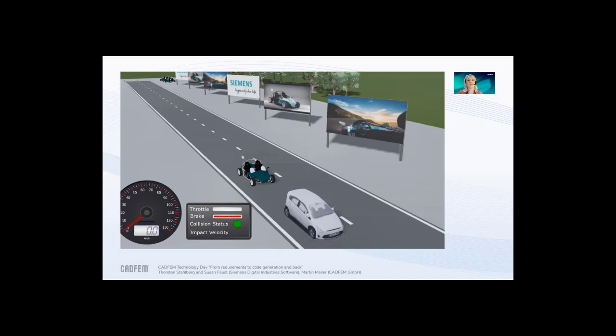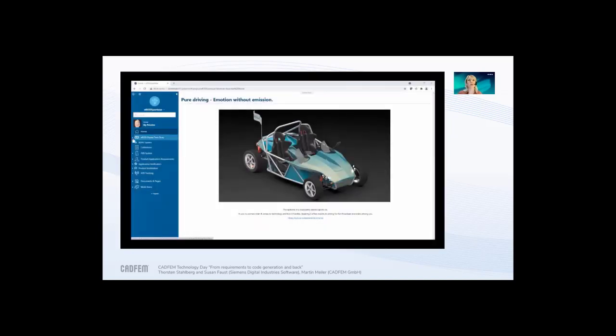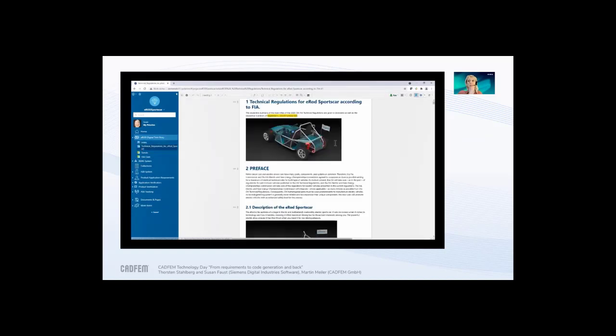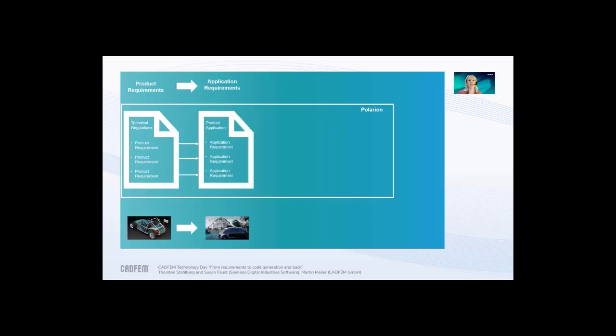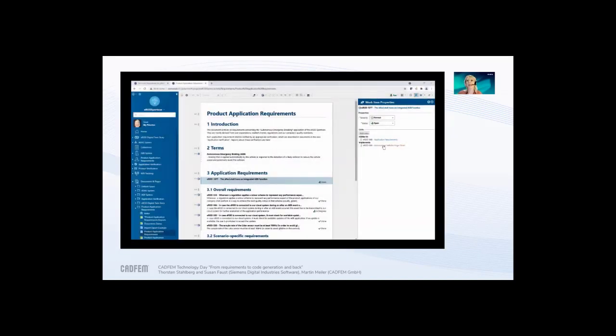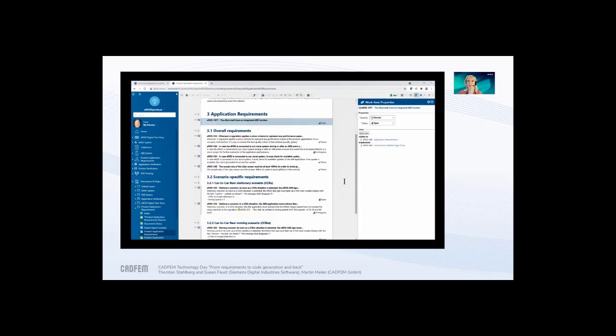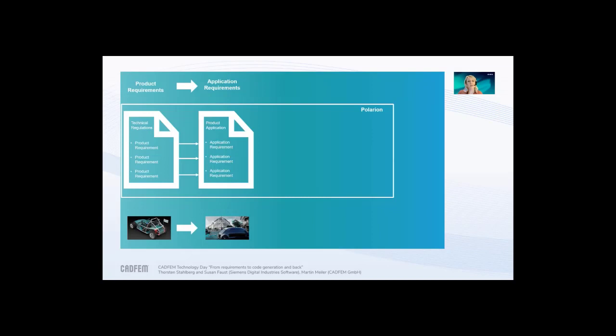To give you a feeling of what we've done in advance: at the very beginning, we had the product requirements, which are part of the Polarion environment. We took all the dedicated technical information of our E-Rod and derived the dedicated application requirements for our software function. These requirements have been integrated in Polarion and linked back to the product level. Based on the application requirements, we then created a model for the software function in Ansys SCADE.